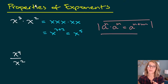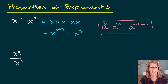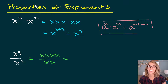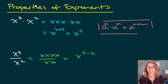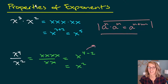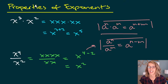Example number two: I've got four x's in the numerator, two in the denominator. Now I could expand these, but we're going to use a rule instead. I see that I can cancel two of them, but the property shortcuts that. So I've got four in the numerator minus two, and that gives me x to the four minus two, or x squared. This property says that a to the n divided by a to the m is equal to a to the n minus m.